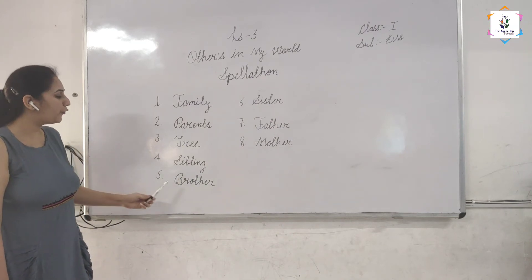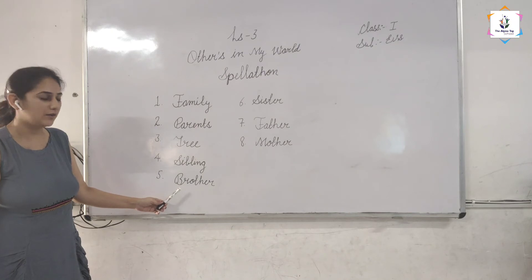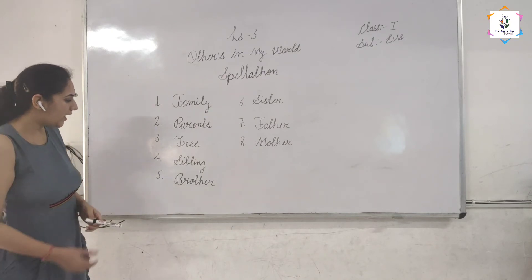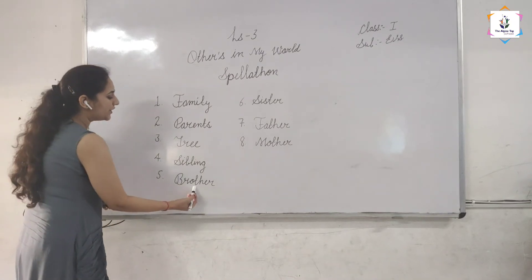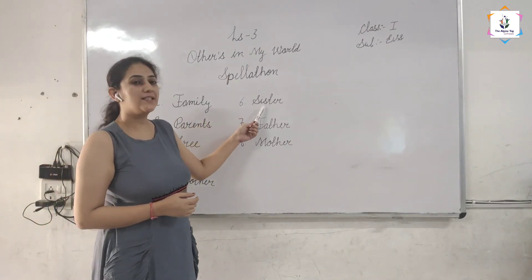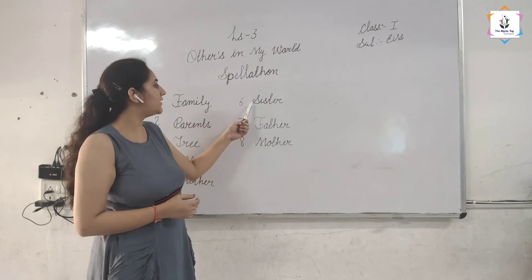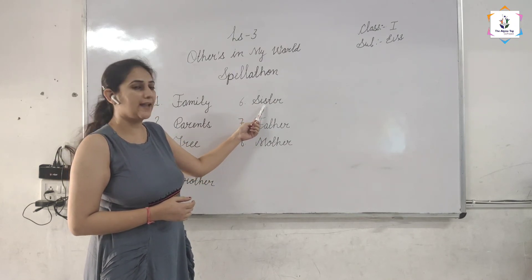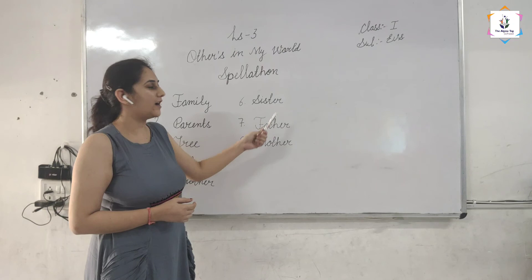Fifth one is brother. Read B R O T H E R, brother. Then sixth one is sister. Let's read S I S T E R, sister.